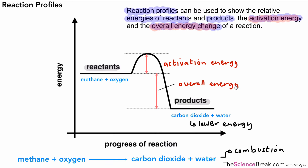Because we've got energy transferred to the surroundings, this is again an example of an exothermic reaction. And if you think about it, it kind of makes sense — combustion is exothermic. Energy is transferred to the surroundings as heat and light, and that's why we have less energy in the products compared to the reactants. It's a combustion reaction.